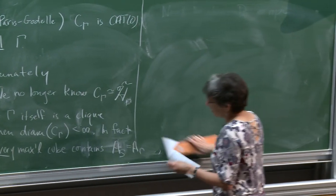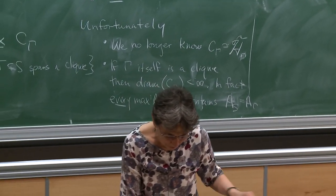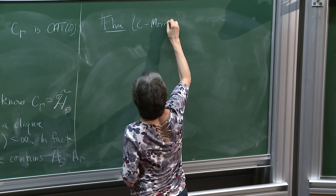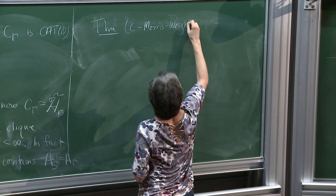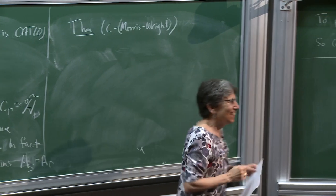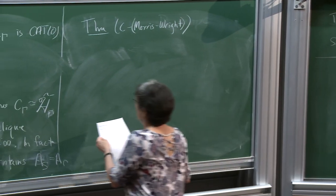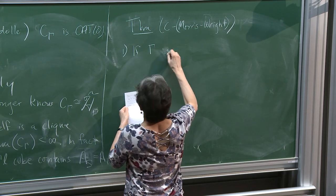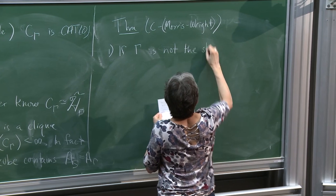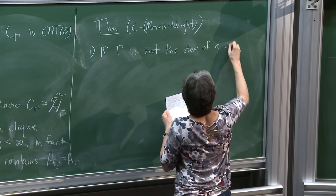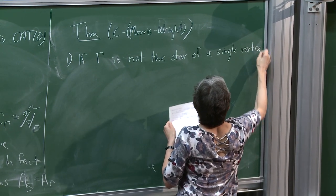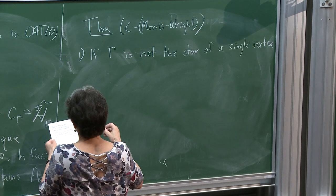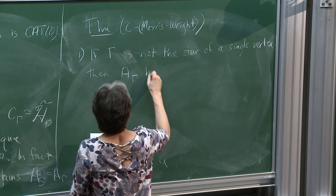So is C(γ) still good for anything? Yes. Here's a recent theorem — myself and Rose Morris-Wright. If γ is not the star of a single vertex — meaning there's no vertex connected to every other vertex in γ — then A(γ) has trivial center. That's conjecture 3.